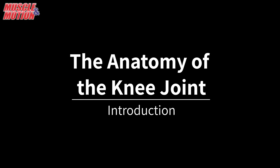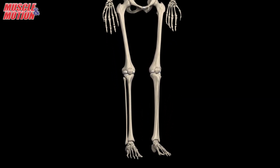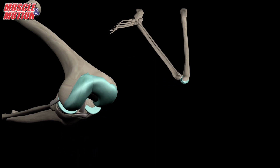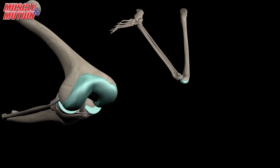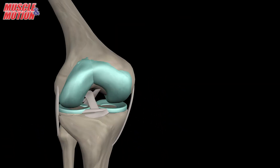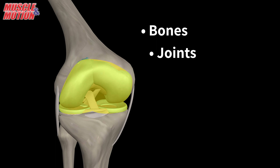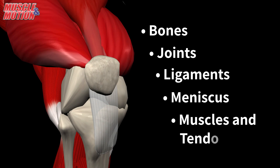The anatomy of the knee joint — introduction. To gain a better understanding of knee problems, it is important to understand the anatomy of the knee joint and how parts of the knee work together to maintain normal function. The important structures of the knee can be divided into a few main categories: bones, joints, ligaments, meniscus, muscles, and tendons.